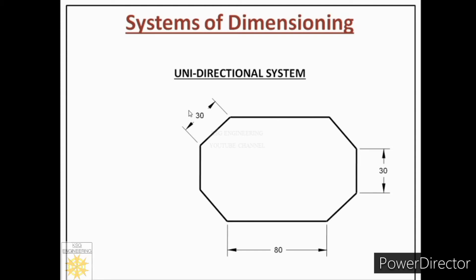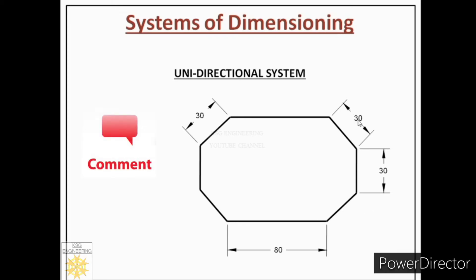Now let us see the inclined case. The dimension is on the dimension line, at the middle, after breaking it, and it is readable from the bottom of the page. Earlier in the aligned system, we placed the dimension at 90 degrees to the dimension line always. But here, the dimension is readable from the bottom of the page for all cases.